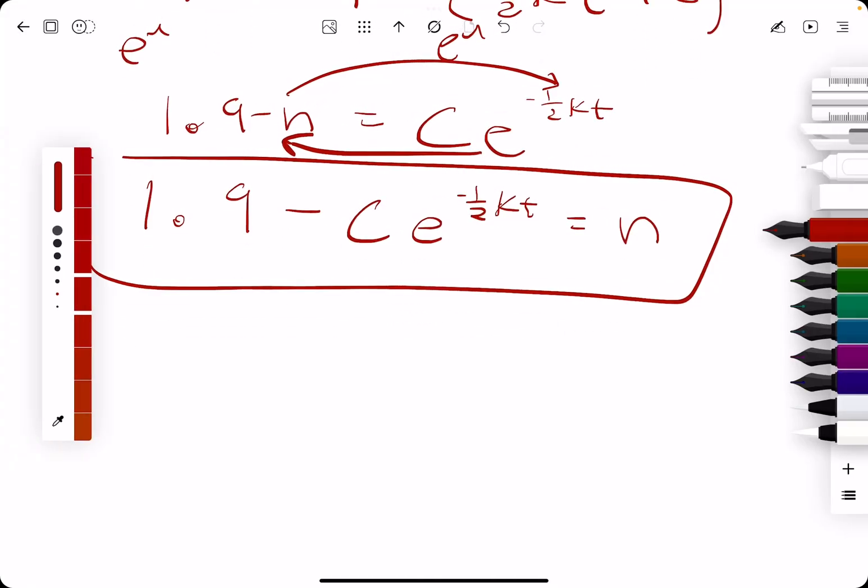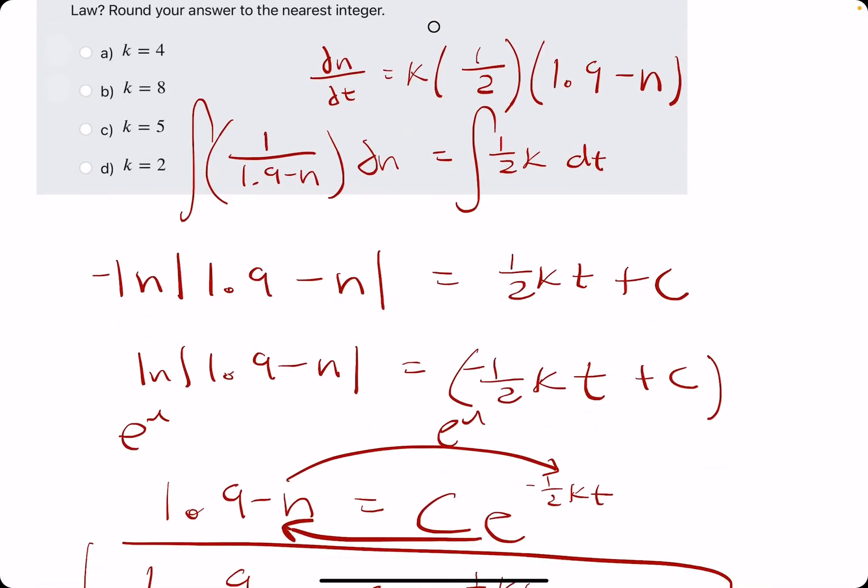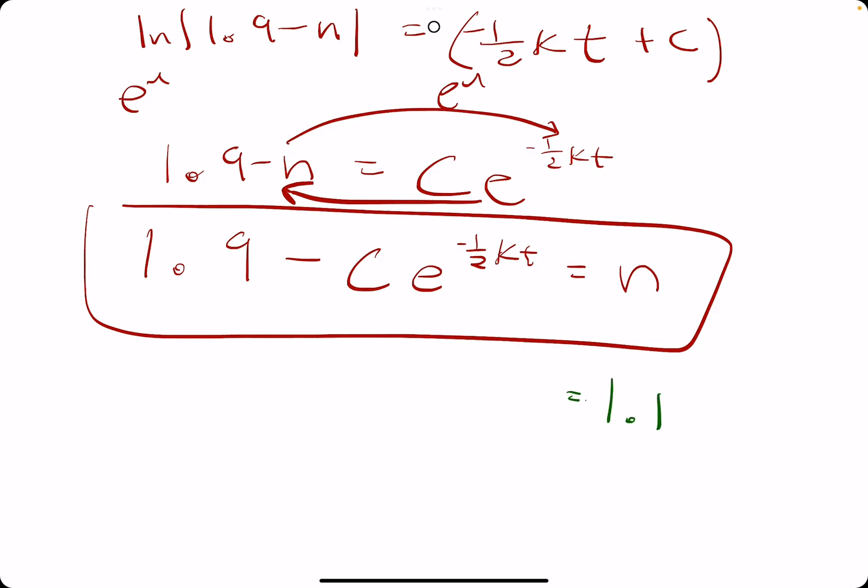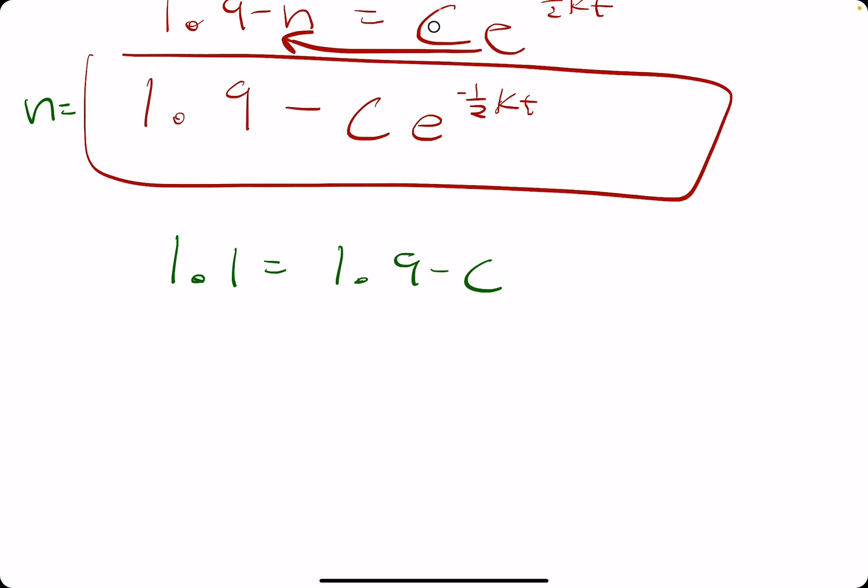And now we want to solve for C by plugging in the initial value that is 0 and 1.1. So, 1.1 for n. And at this point, I think I'm going to switch it around. So, we'll have n equals this. So, 1.1 equals 1.9 minus C e to the negative one-half kT times 0. All this stuff times 0 in the exponent makes the exponent 0, which makes e to the 0 equal 1. C times 1 is just C.